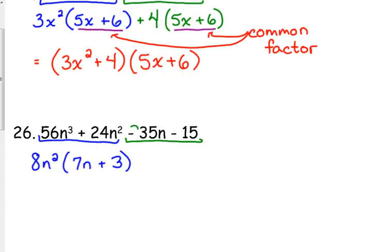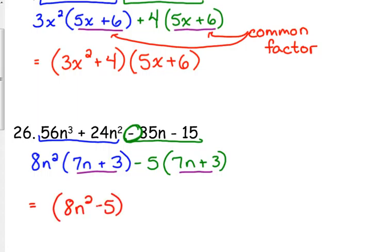For the second pair, notice since that 35n is negative, we need to factor out a negative 5. We need to take out a negative 5, because if we don't, then our signs will not match up with the other binomial. If we take out a negative 5, we're left with positive 7n + 3. We have our common factor of 7n + 3. So our final answer, put the GCFs together, (8n² - 5), list your common factor once, (7n + 3).